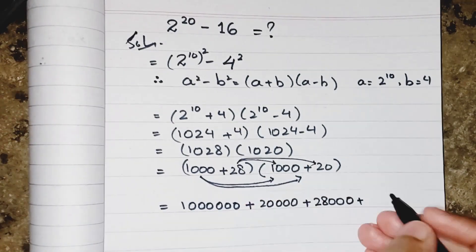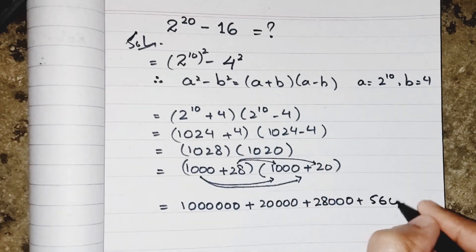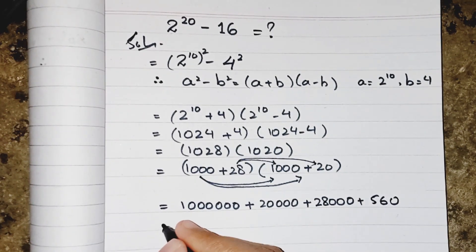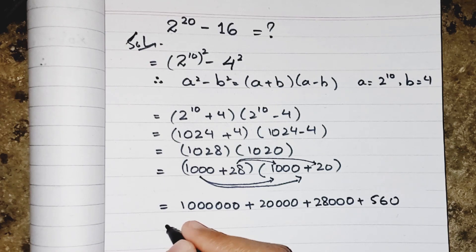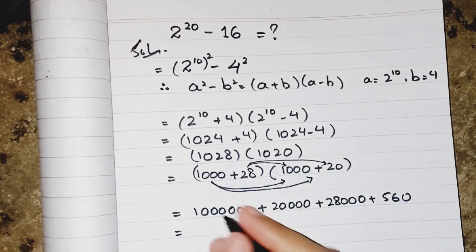Now to add all of them is not difficult or a big deal for us, so we can simply add them: 1,000,000 plus 20,000 plus 28,000 plus 560, and my answer will be 1,048,560.